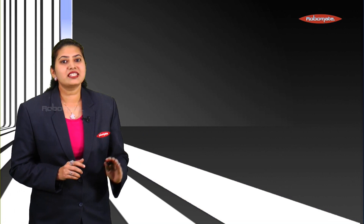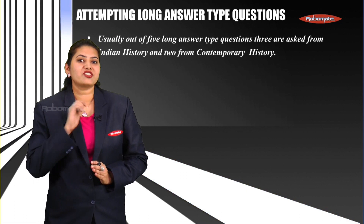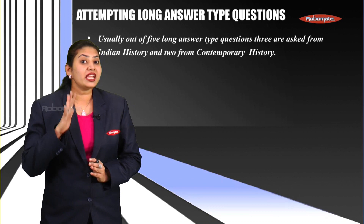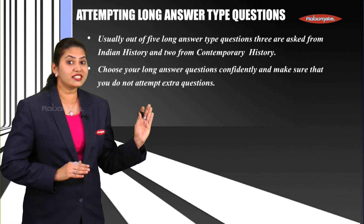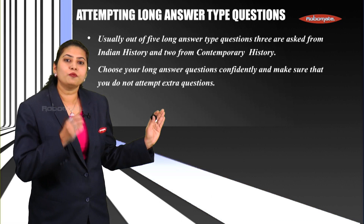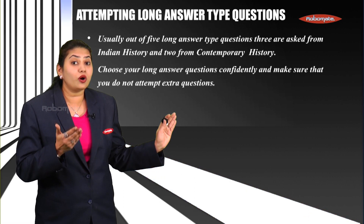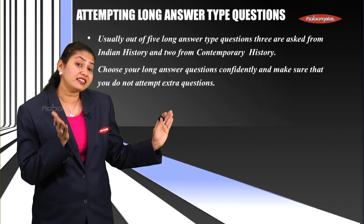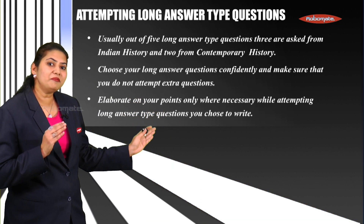Now let us understand how to attempt long answer type questions in history. Usually five long answer type questions are asked in section B of part two — three from Indian history and two from contemporary world history. Choose your long answer type questions very confidently, and once you are confident about your choice, properly elaborate on the answer. Do not write any extra questions, as it will eat up your time without incrementing your marks.